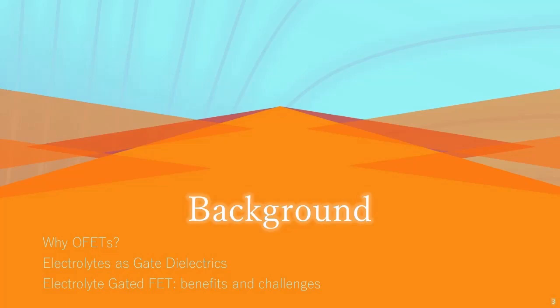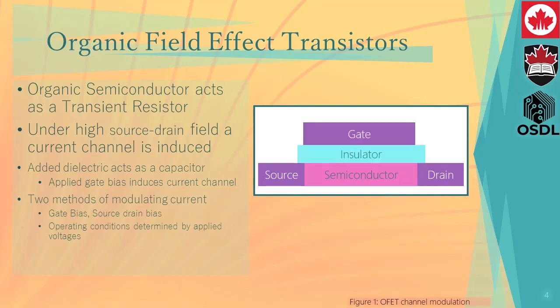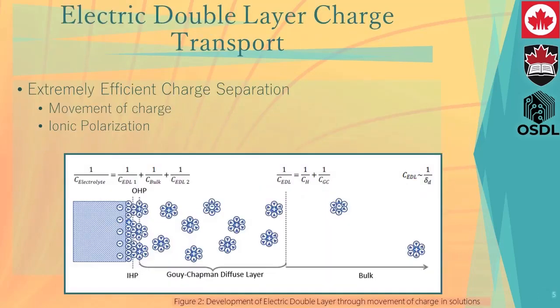I begin by discussing why we use an OFET architecture with an electrolyte as a gate dielectric, and the benefits and challenges associated with these devices. Organic semiconductors act as transient resistors under sufficiently high source-drain electric fields to induce current channels. The current channel can also be induced by an electric field from an isolated gate electrode, where the effective field is dependent on the applied bias and the dielectric properties of the insulating layer. Thereby, the device operating conditions are determined by the applied voltages and the material properties of the device.